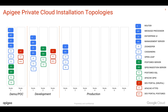On the first machine you will install the management server, which includes Zookeeper, Cassandra, OpenLDAP, Edge UI, and management server. On the second machine you will install router, message processor, Zookeeper, and Cassandra. Similarly, on the third machine you will again install router, message processor, Zookeeper, and Cassandra. These two message processors — which are nothing but gateways — are load balanced using a load balancer. All three Zookeeper nodes and Cassandra nodes form a ring-like topology so that you can achieve high availability and scalability.